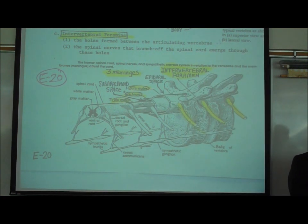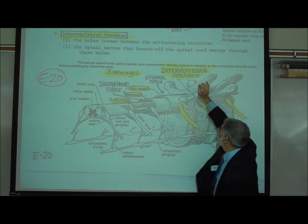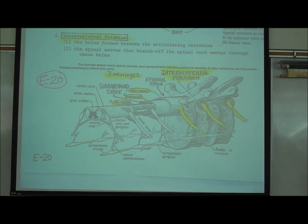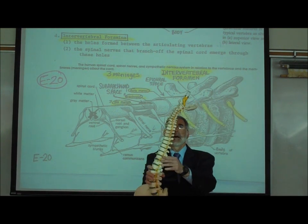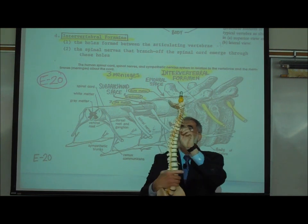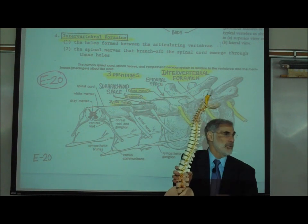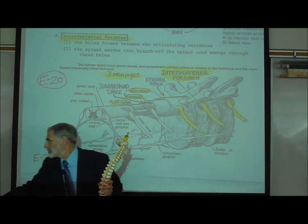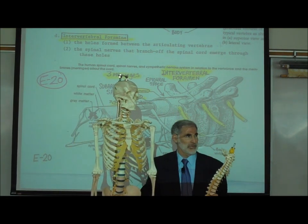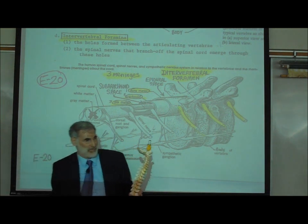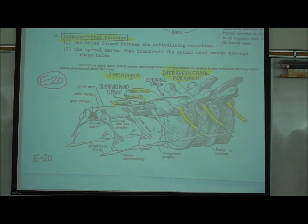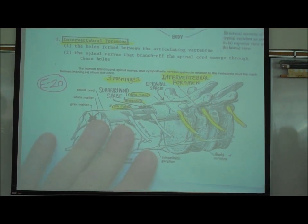The word 'inter' means between, so there are foramen or holes between the vertebrae. On this model of the vertebral column, you can see the yellow spinal nerves coming out through holes between the vertebrae — through the intervertebral foramen. It's also shown on some skeleton models where the yellow nerves come out through these openings between the vertebrae.